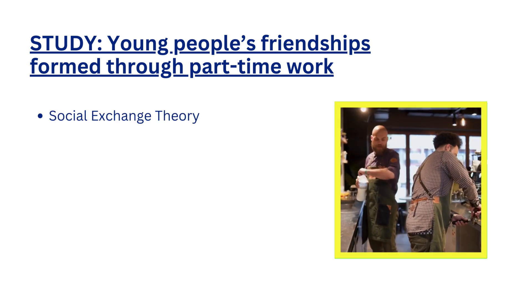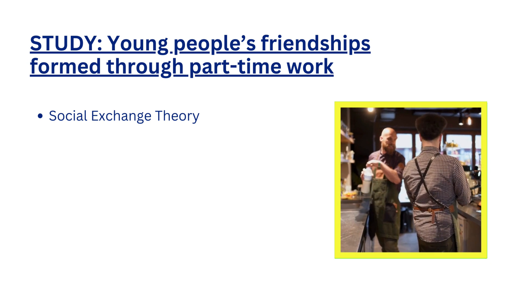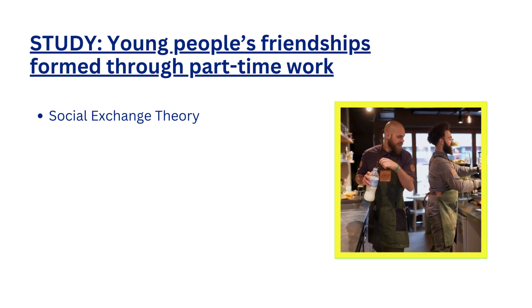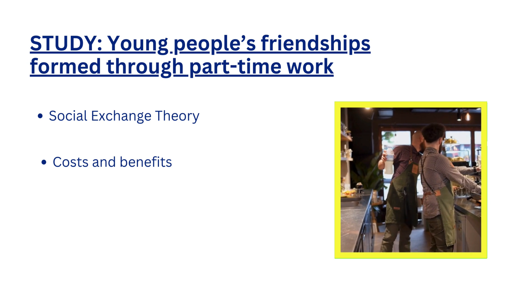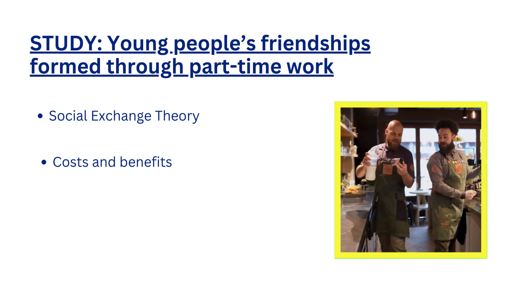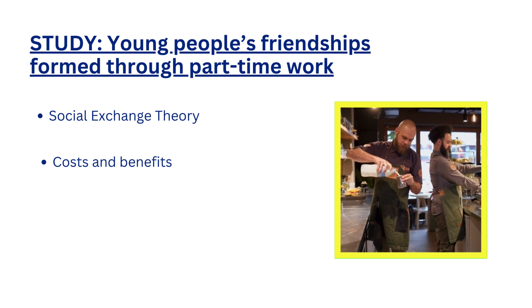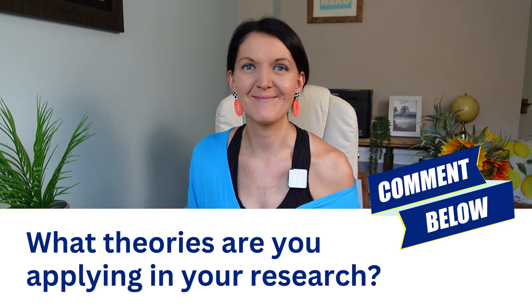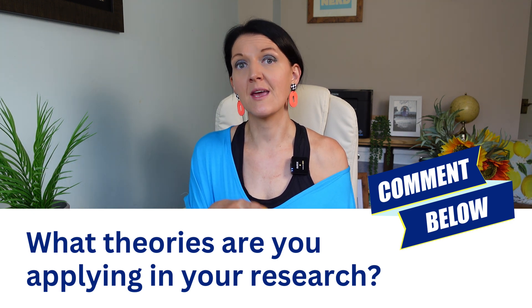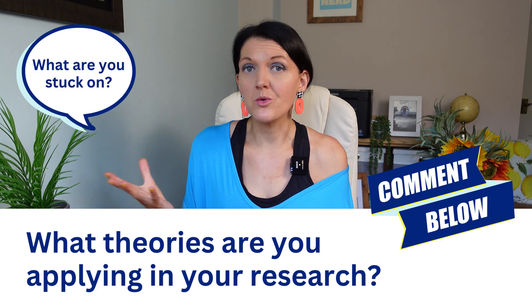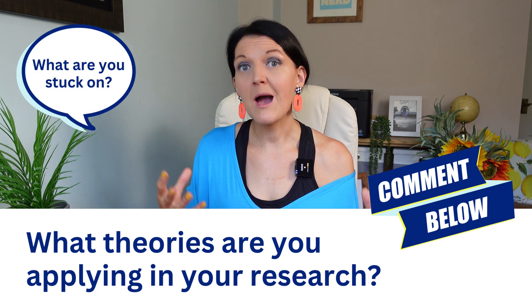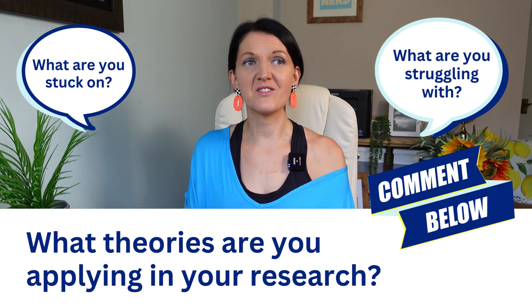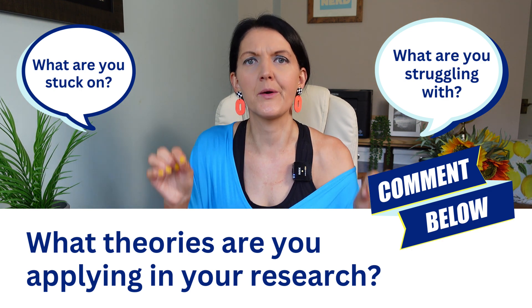Going back to our example study of young people's relationships at work, you might use social exchange theory to look at how those friendships are formed. That theory suggests people form relationships based on weighing up the costs and benefits. You could investigate whether young people are more likely to form friendships with co-workers when the benefits — like emotional support and camaraderie — outweigh the costs like time and effort. I'd love to hear in the comments what theories you're applying in your research and what you're struggling with.